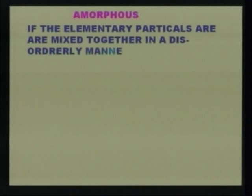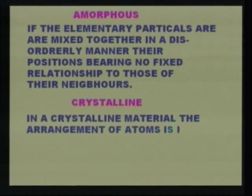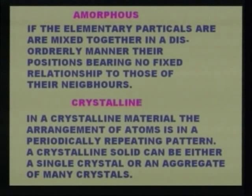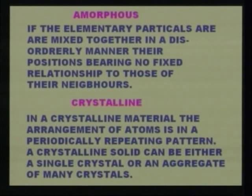All elements can exist as either solid, liquid, or gas depending upon the conditions of temperature and pressure. A solid is a state of matter in which the substance possesses rigidity and tendency to maintain both its shape and volume. Substances can be classified as amorphous or crystalline. Amorphous means the elementary particles are mixed together in a disorderly manner, their positions bearing no fixed relationship to those of their neighbors, whereas in a crystalline material, the arrangement of atoms is in a periodically repeating pattern.